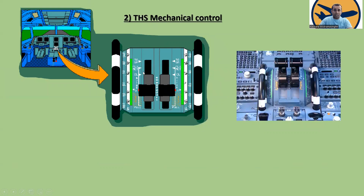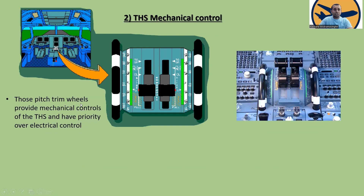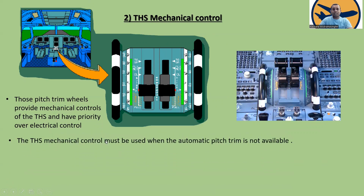Now the THS mechanical control. You can see the pitch trim wheels — those pitch trim wheels provide mechanical control of the THS and have priority over electrical control. The THS mechanical control must be used when the automatic pitch trim is not available.